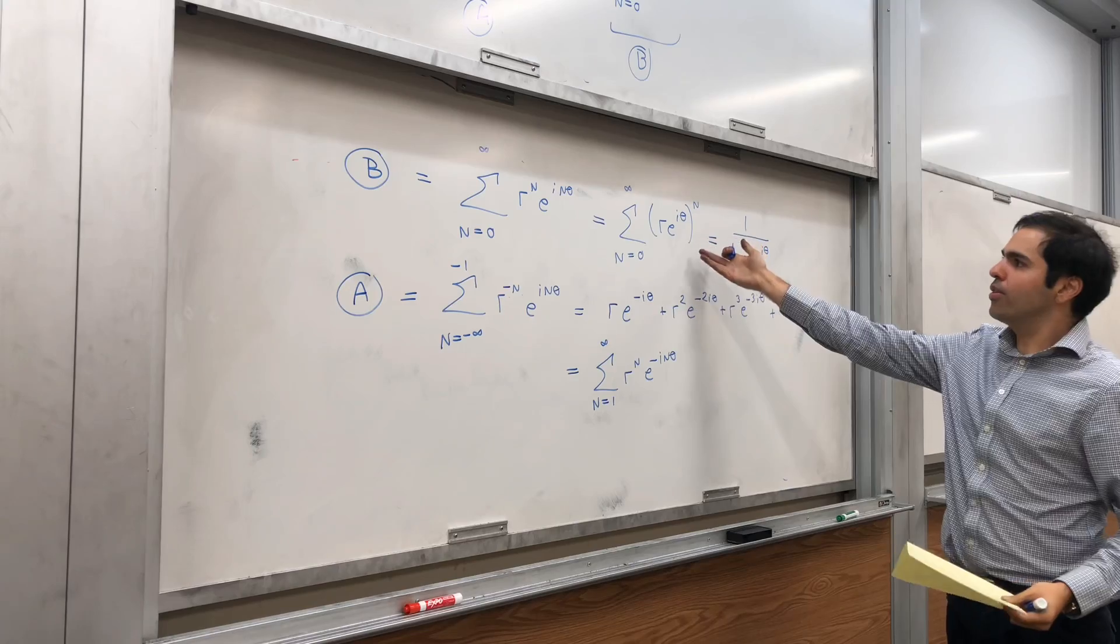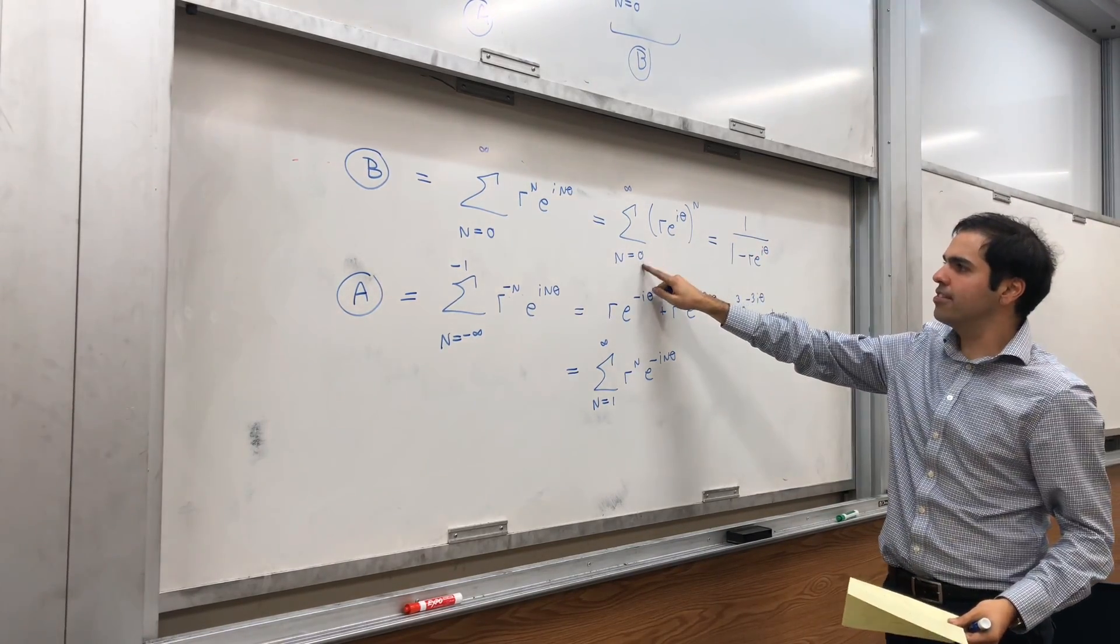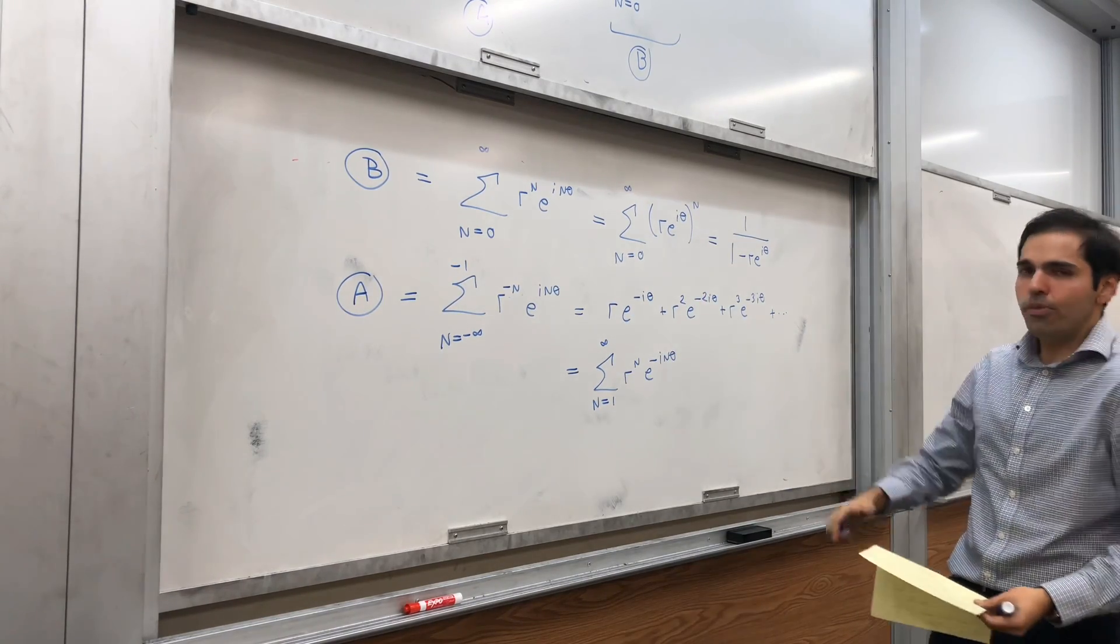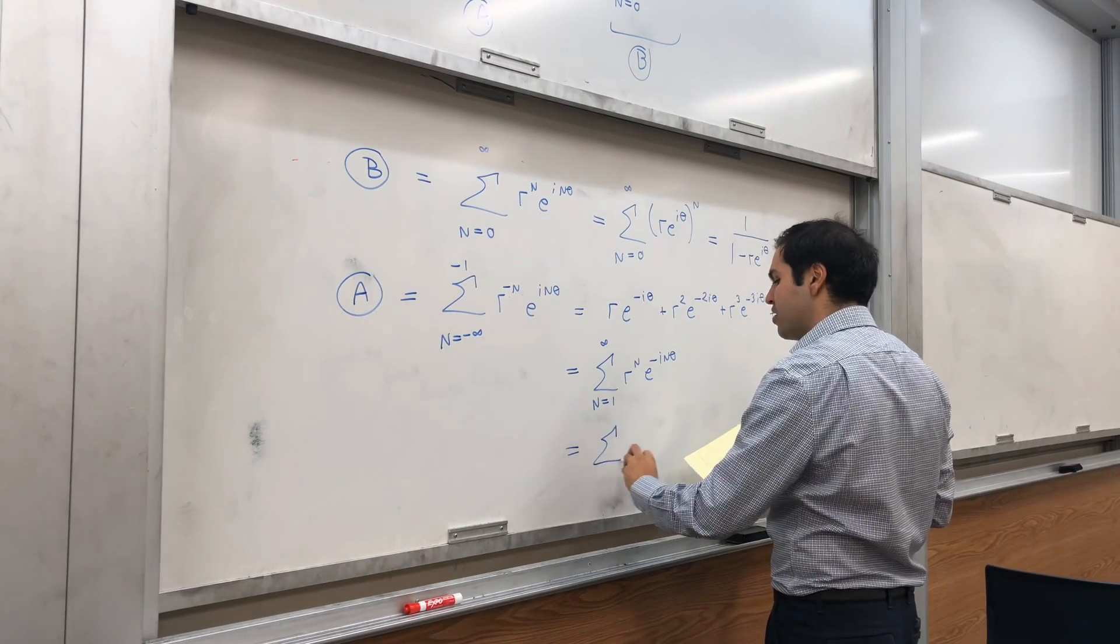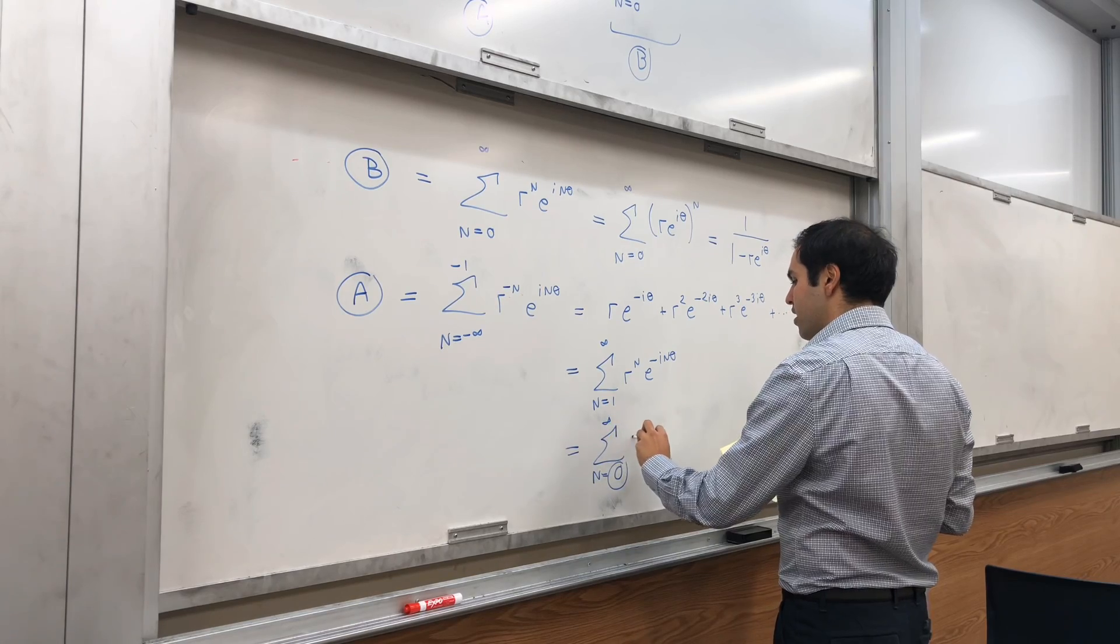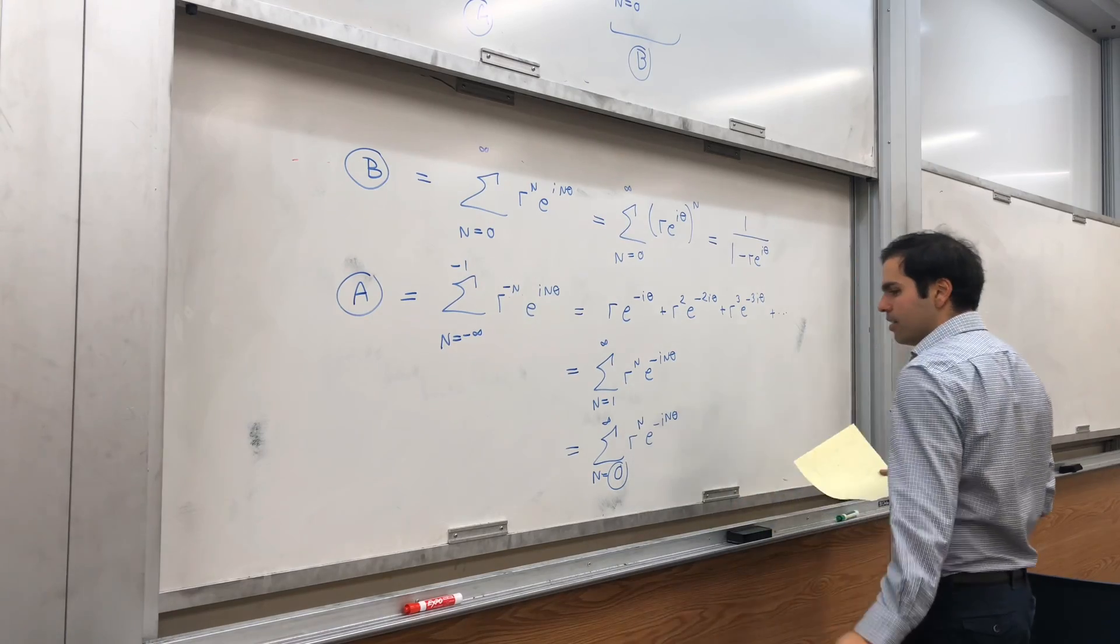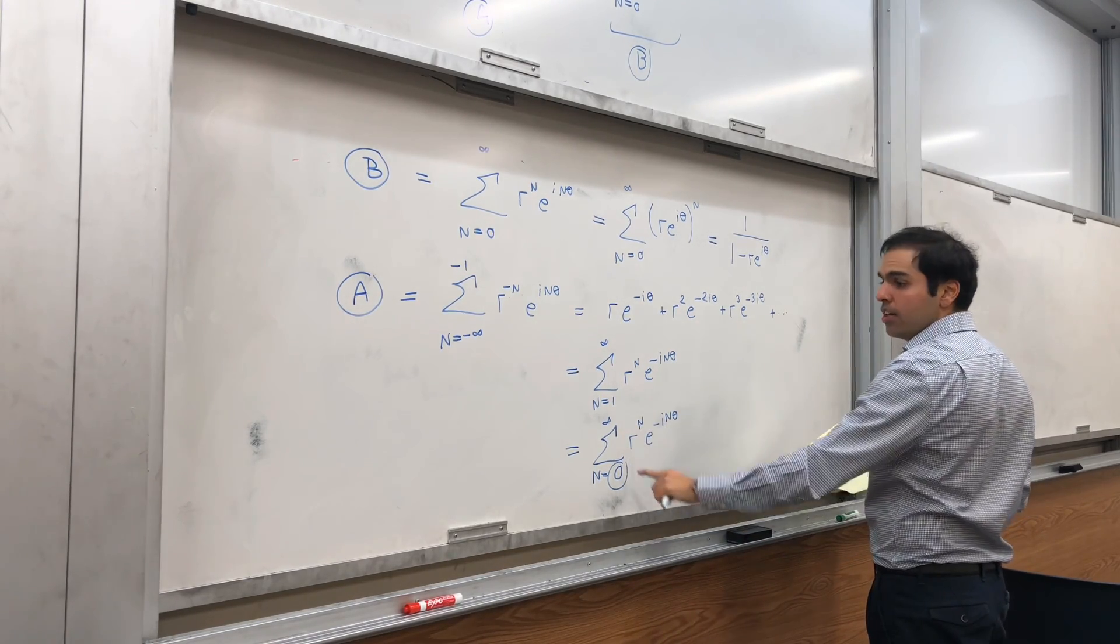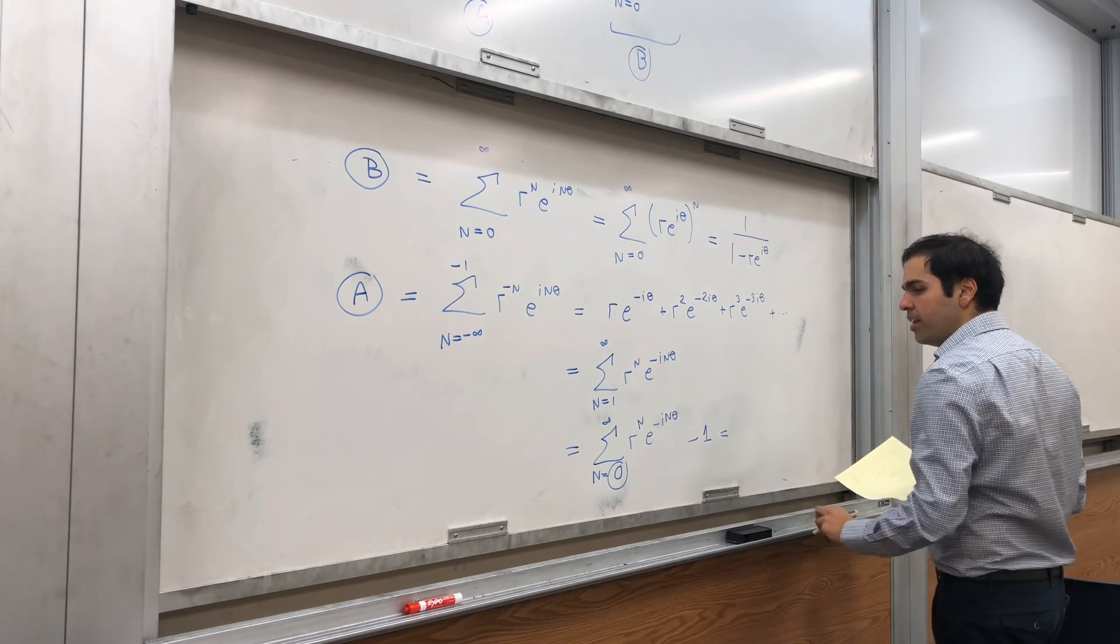All right, and the reason is we want to use a similar trick here. Just one thing, to use a geometric series, we have to add 0, the 0th term. Well, we can do this by adding and subtracting 1. So it's really the sum from n equals 0 to infinity r^n e^(-inθ). And then, the 0th term becomes 1, so in order to make this valid, you subtract 1.